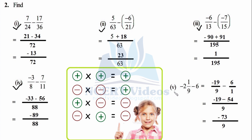Last part of Question 2 involves a mixed fraction. 9 × 2 = 18, 18 + 1 = 19, so it becomes −19/9. The integer 6 has denominator 1, so it is 6/1. LCM of 9 and 1 is 9. (9/9) × (−19) = −19, minus (9/1) × 6 = 54. Same sign (both negative): add them: −19 + (−54) = −73. Answer: −73/9.